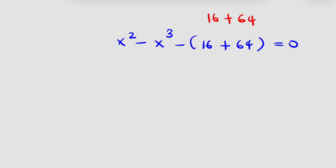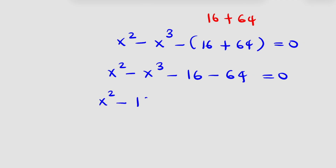If I open up this bracket, x squared minus x raised to power 3 minus 16 minus 64 is equal to 0. I would write this as x squared minus 16 minus x raised to power 3 minus 64 is equal to 0.